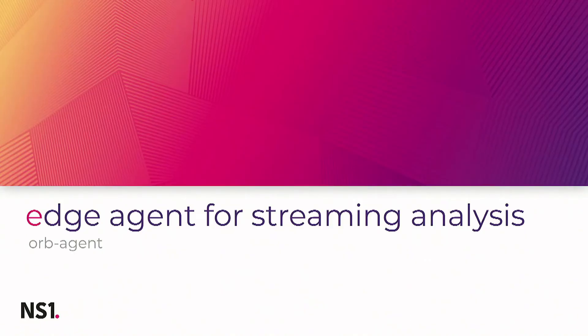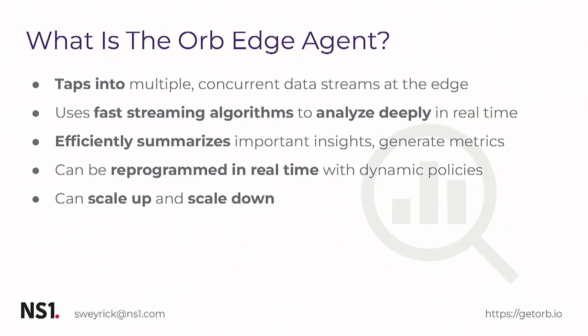The other side is the ORB edge agent, deployed as close as possible to the events you want to analyze. The agent taps into multiple concurrent data streams at the edge, using streaming algorithms to analyze deeply in real time, extract the signal from the noise, efficiently summarize what we care about, and generate lightweight metrics to ship back. The ability to dynamically program the entire fleet in real time is very important. The ORB edge agent is designed to both scale up and scale down — it's efficient enough to run on a Raspberry Pi, but it can also horizontally scale and work with multiple CPUs.